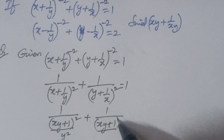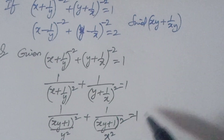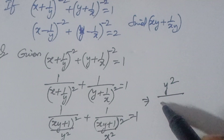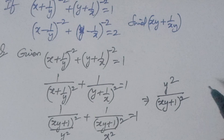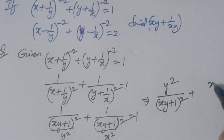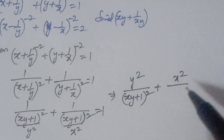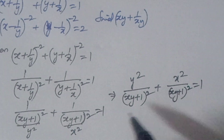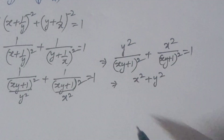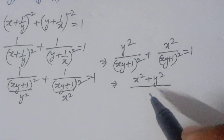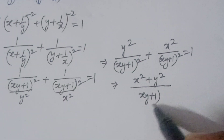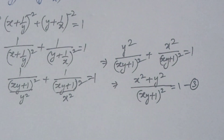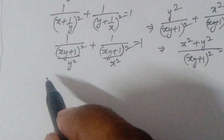Combining and taking reciprocals, we get (x^2 + y^2) / (xy + 1)^2 = 1. Let this be equation 3. Now moving to the second equation.